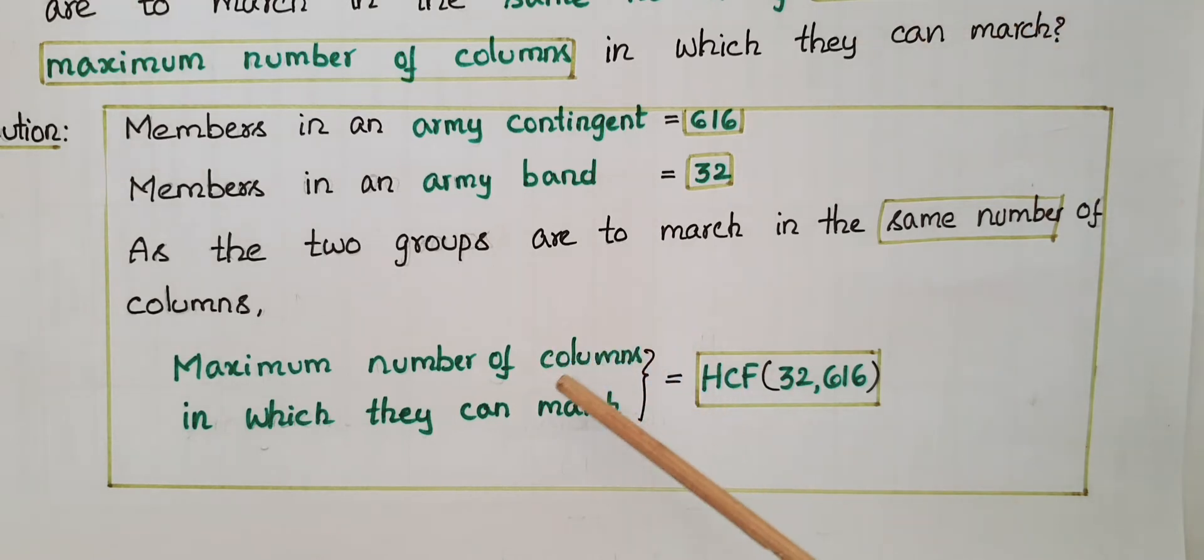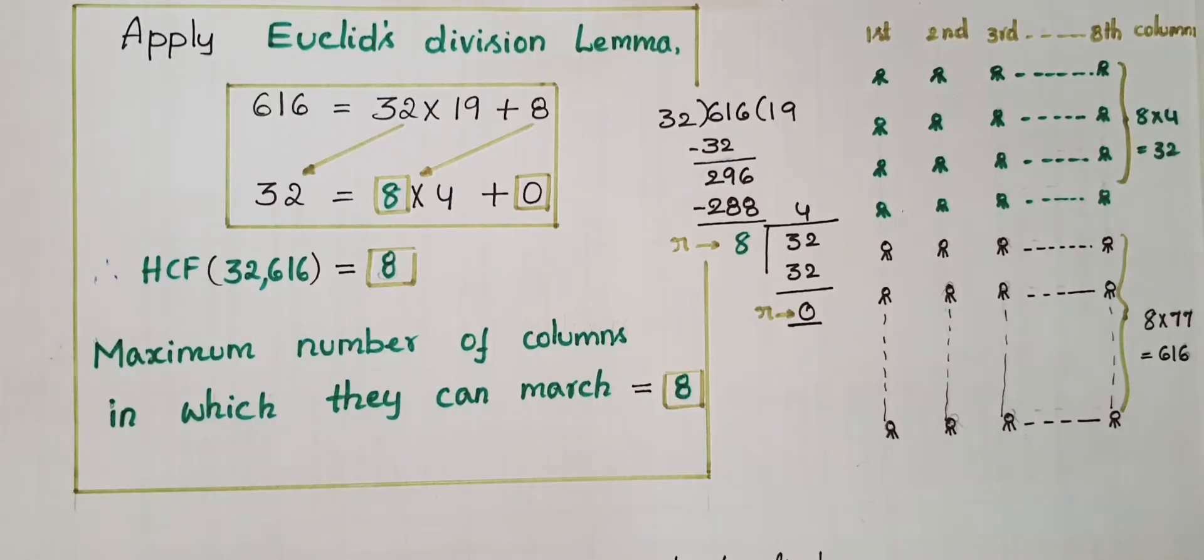Here we have to find maximum number of columns, that is equal to HCF of 32 and 616, because maximum means highest common factor for these two numbers. To find HCF we can use Euclid's division algorithm. Apply Euclid's division lemma on these two numbers.